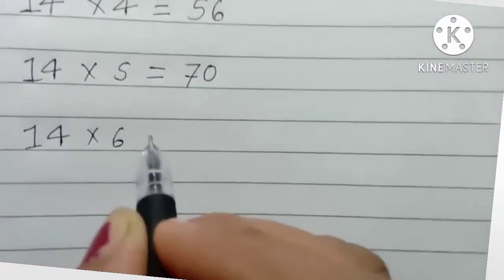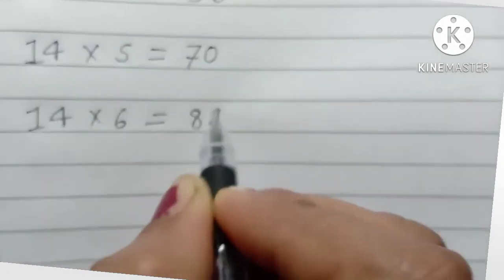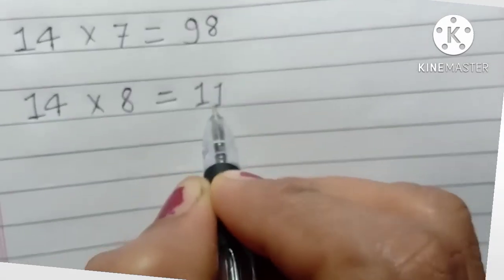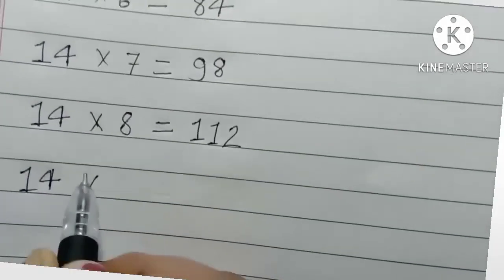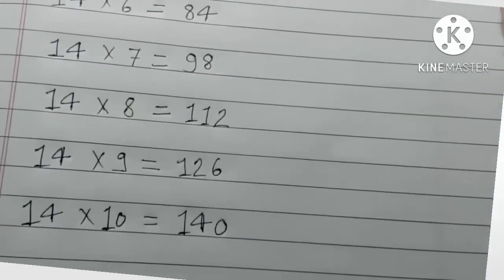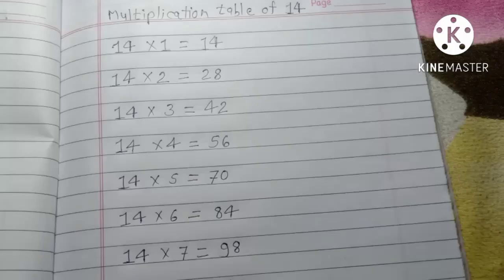14 6s are 84. 14 7s are 98. 14 8s are 112. 14 9s are 126. 14 10s are 140.